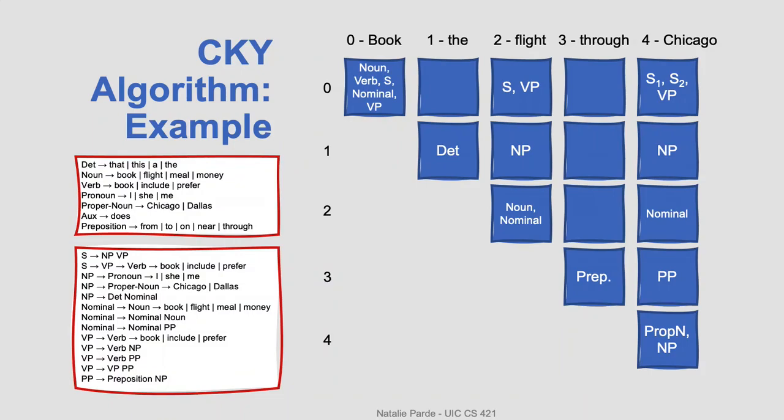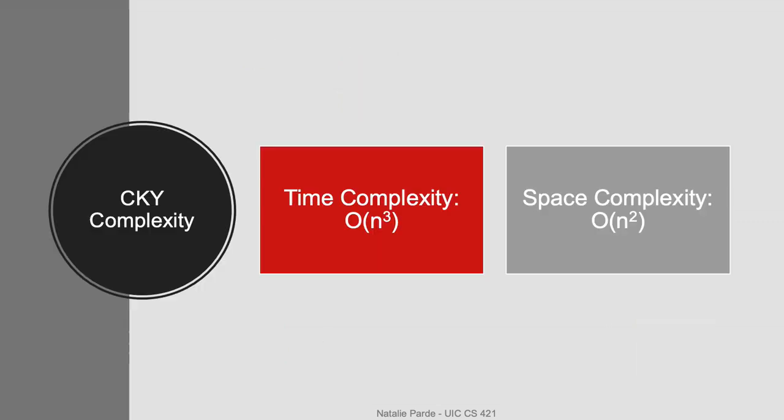In the case of the example we were working with, that would look like this. CKY does have a fairly high time and space complexity. However, overall, it's a nice, simple, dynamic programming approach to finding constituency parses according to a specified grammar.